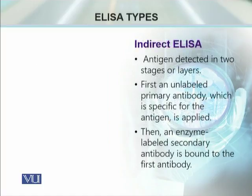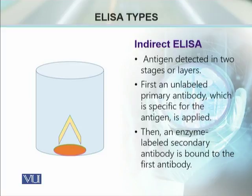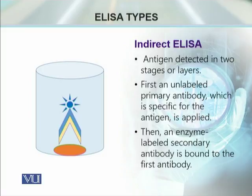Indirect ELISA slightly differs from direct ELISA. In this method, the basic principle is the same — the well is coated with the antigen or sample. Then we add a primary antibody, which is specific for the protein or antigen of our interest. This primary antibody is not coupled with any enzyme. Rather, there is a secondary antibody which can bind with this primary antibody, and this secondary antibody is coupled with the enzyme, so that we can detect its presence. Wherever the primary antibody is bound with the antigen, there we will see the binding of the secondary antibody.